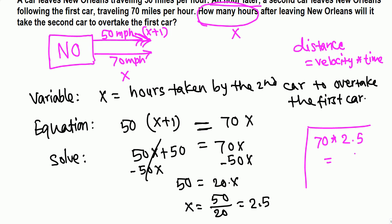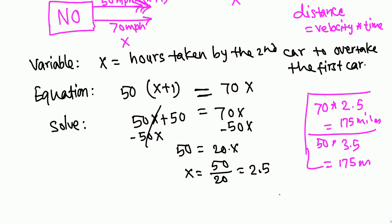How about the first? First is going at the rate of 50 times 2.5, and it started one hour earlier, so 2.5 plus 1 equals 3.5. If you multiply 50 times 3.5, 50 times 3 is 150, and half is 25, so 150 plus 25 equals 175. So this is the answer.